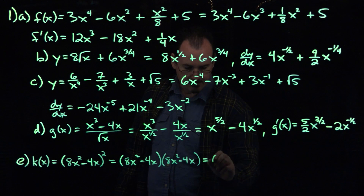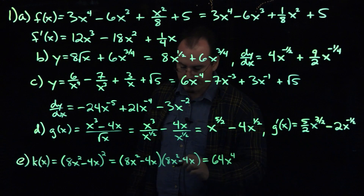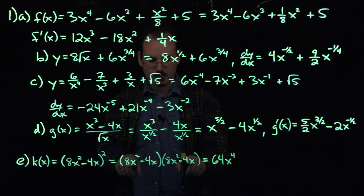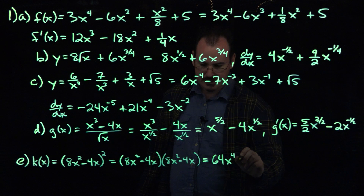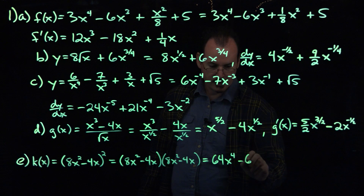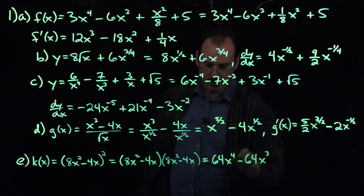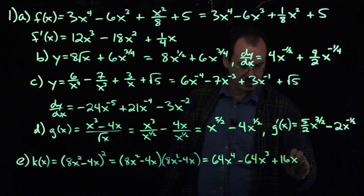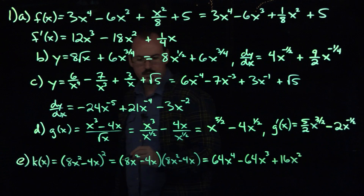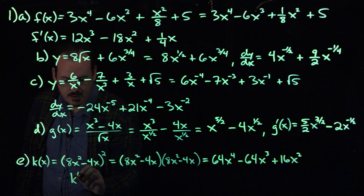The first term will give us 64x to the fourth. The outer term gives us minus 32x to the third, and then there will be another minus 32x to the third from the inner term, so that's minus 64x to the third. And then the last term will give us plus 16x squared.